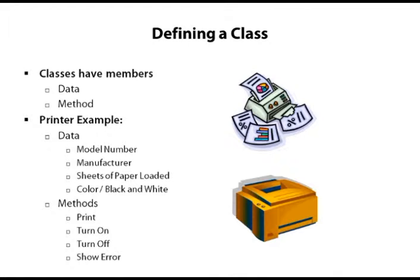Looking at our printer example, here are some things that might be considered data: the model number, a manufacturer, the sheets of paper that are loaded, whether it's color or black and white, whether the printer is currently on or off. All of the attributes specific to a printer — not just a printer in general, but the current state of that printer. These are the things that are considered data.